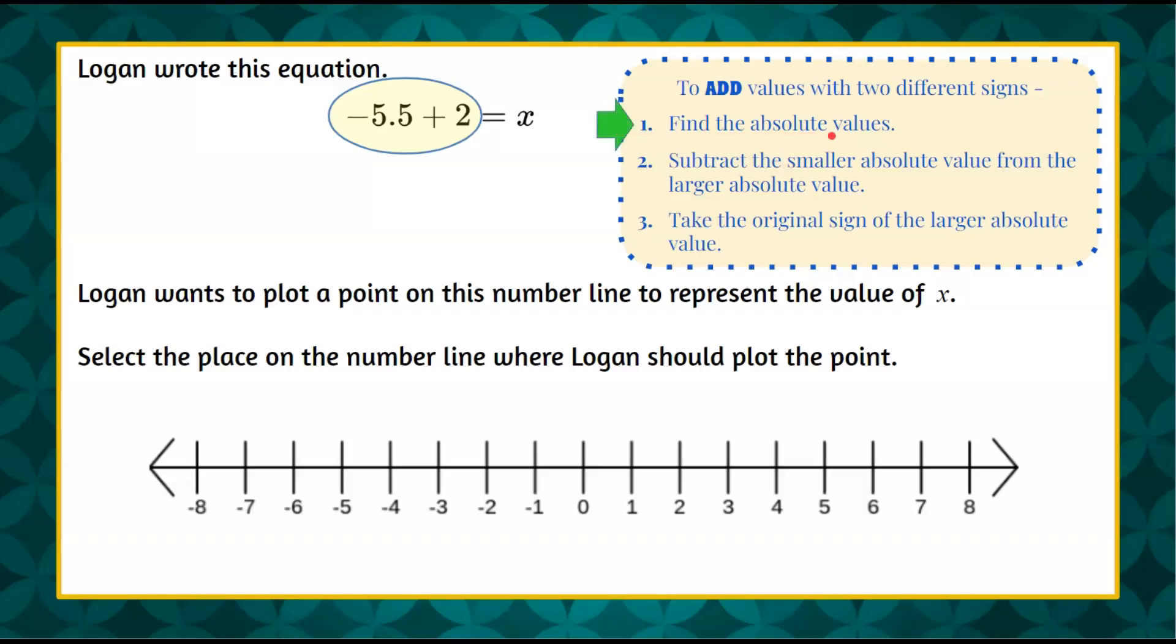So step one, we're going to find the absolute values. The absolute value of any value is the distance it is from zero, and the distance from zero, or a distance from anywhere, distance is always positive.